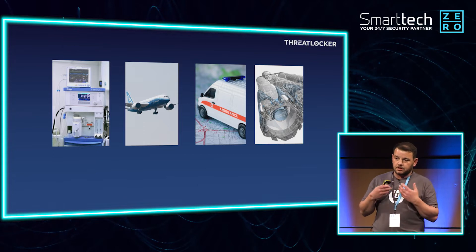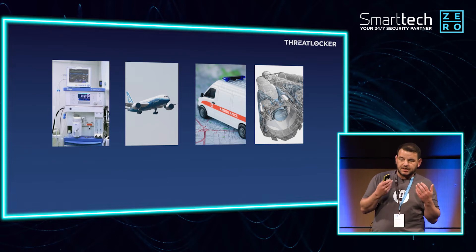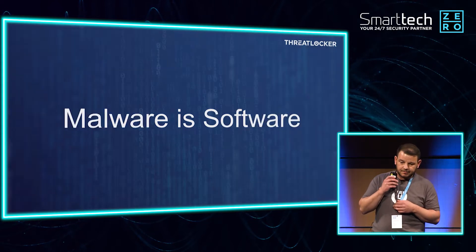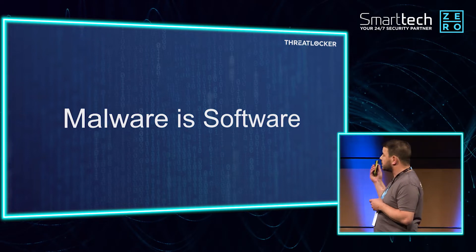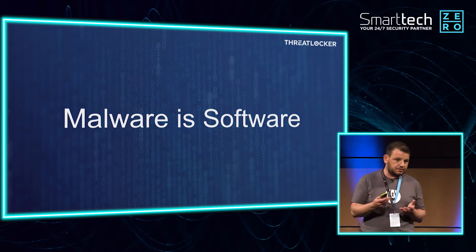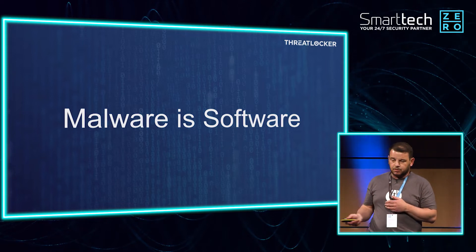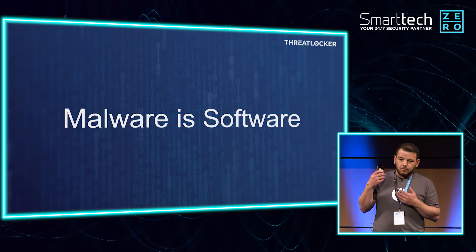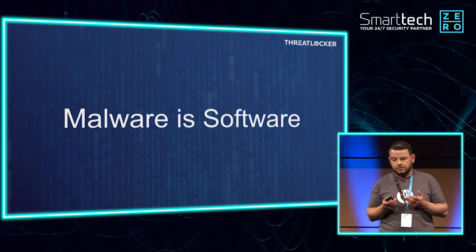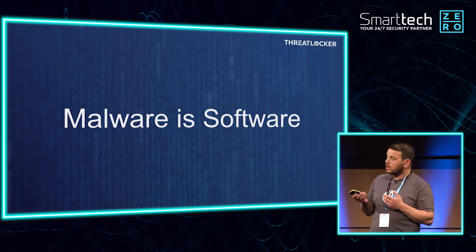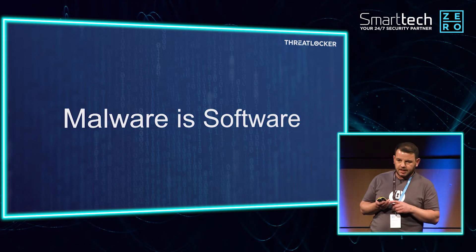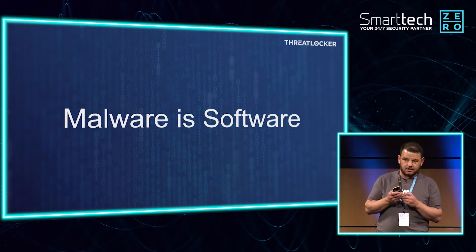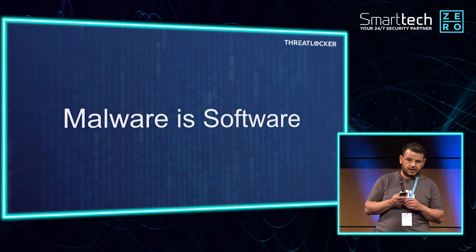But when it comes to software, those possibilities are also potentially bad for us. At the end of the day, malware is software. What's the difference? It's just code — code that's been developed and executed within an environment. There's nothing that says whether it's good or bad. Depending on what side of the defense you're on, the outcome is either good or bad. When it comes to malware, 540,000 pieces of malware are detected every single day. There are over a billion pieces of malware out there.